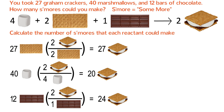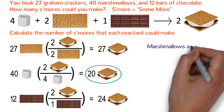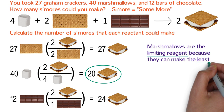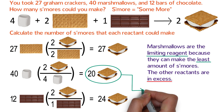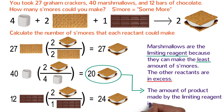Now look at the different amounts of s'mores you can make from each reactant. You can only make 20 s'mores, because after that you won't have any more marshmallows. Marshmallows are the limiting reagent because they can make the least amount of s'mores. The limiting reagent is the reactant that can make the least amount of product; the other reactants are in excess. The theoretical yield is the amount of product made by the limiting reagent — always the smallest amount of product you calculate. Here, that is 20 s'mores.